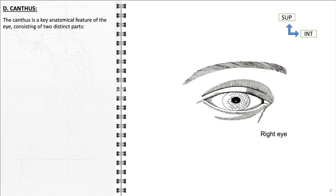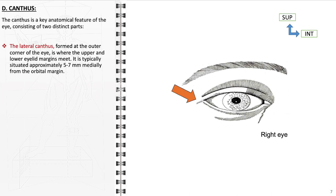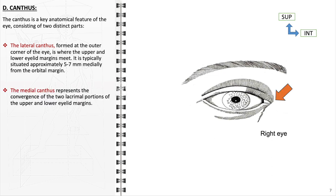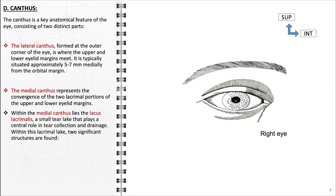The canthus is comprised of the lateral and medial canthi, each playing a unique role in ocular function. The lateral canthus, situated at the outer corner of the eye, marks the junction of the upper and lower eyelid margins, aiding in structural integrity and functional movement of the eyelids. It typically lies about 5 to 7 mm medially from the orbital margin. The medial canthus represents the convergence of the two lacrimal portions of the eyelid margins and is particularly significant in the lacrimal system. Within the medial canthus lies the lacus lacrimalis, a small tear lake crucial for tear collection and drainage.